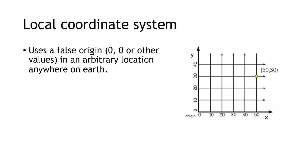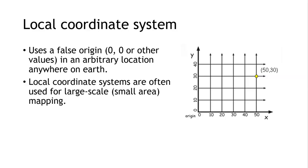The last one is a local coordinate system. It includes a false origin—it could be 0, 0 or some other values, whatever you see on the picture highlighted on the right of this slide. We try to define some arbitrary location anywhere on the surface of the earth with the help of local coordinate systems. Local coordinate systems are often used for large scale mapping.